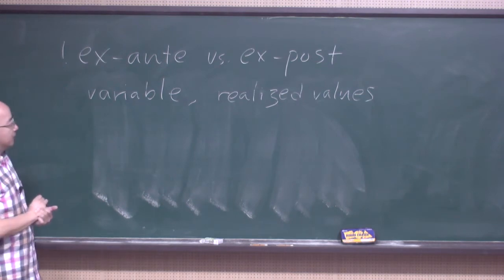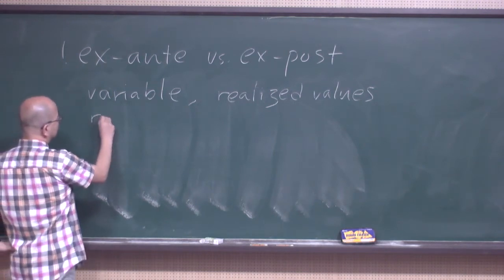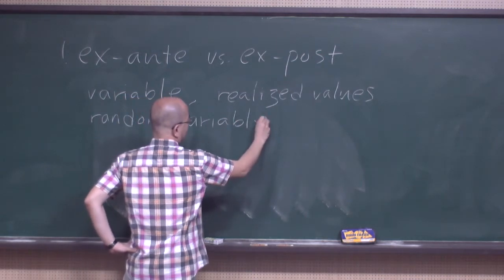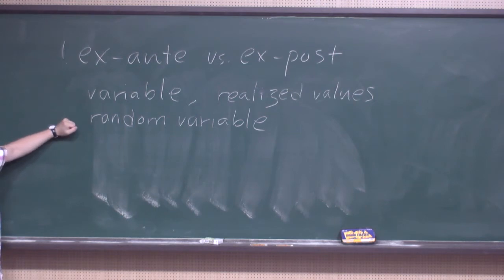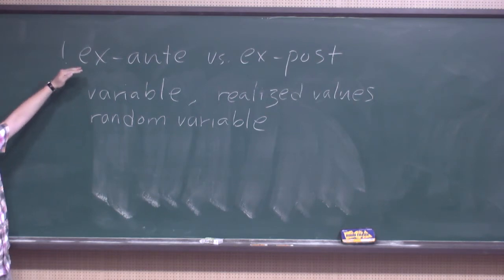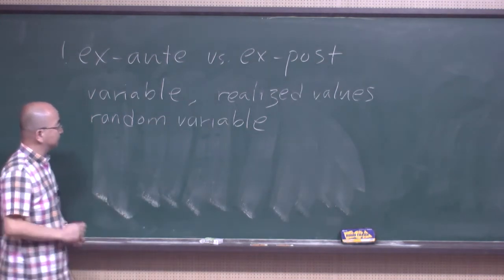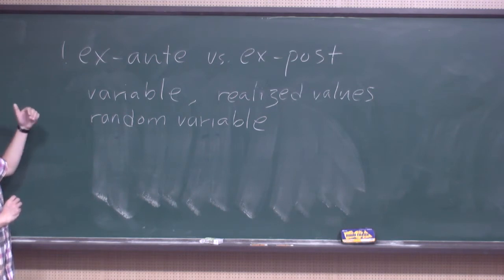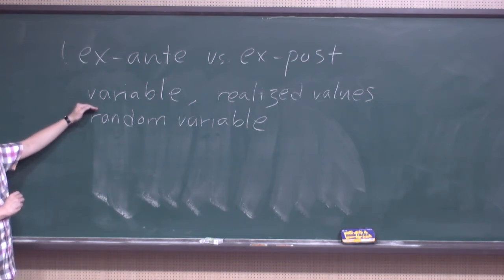Now let's talk about this distinction in a slightly different setting. When we talk about statistics, we have a somewhat different concept that is related but not exactly the same thing — we have something called a random variable. The difference between a plain variable and a random variable is that when we talk about a random variable, we are taking the ex-ante perspective; it can take different values. But by saying 'random variable' we are also saying that we can think of the probability that this variable takes a particular value.